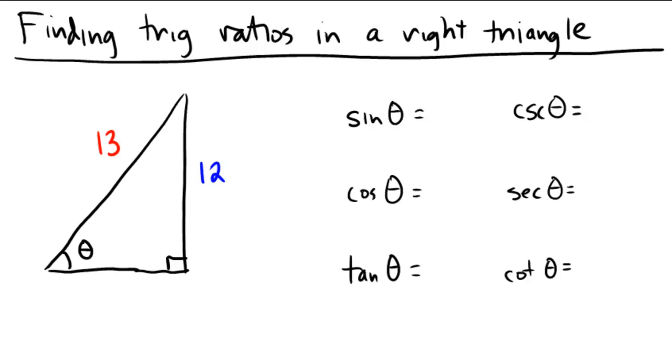This problem is asking us to find the trig ratios in a right triangle, and for this we're going to use the mnemonic SOH CAH TOA. SOH CAH TOA tells us that the sine ratio is the ratio of the opposite leg to the hypotenuse, cosine is the adjacent leg to the hypotenuse, and tangent is opposite leg to adjacent leg.